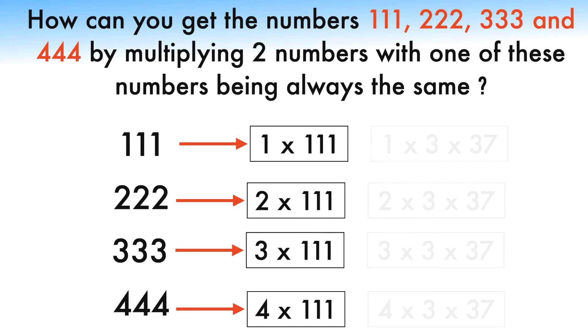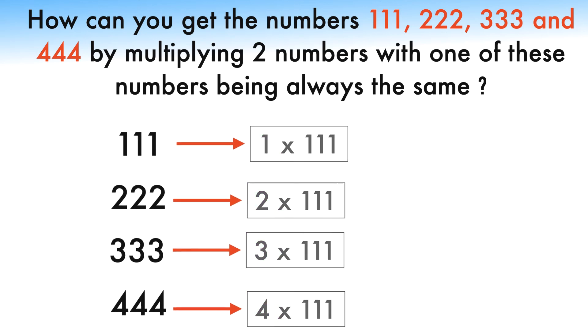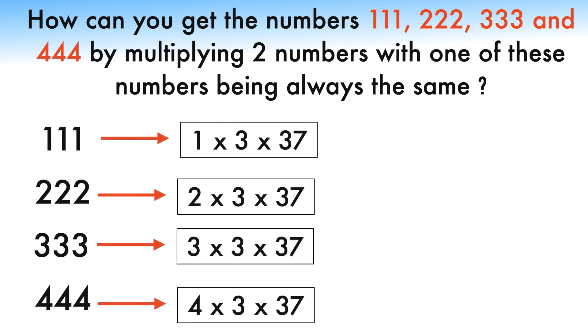So, you can either go the obvious and straightforward route of having one of the two numbers be 111, then the second number is 1, 2, 3, and 4 respectively. Or, you can note that 37 is common to the factorization of all 4. Use that. There are two possibilities here.